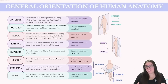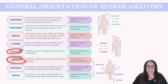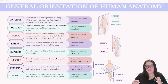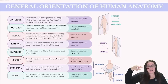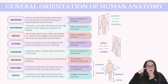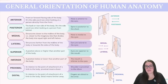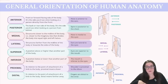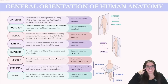Just like we talked about before with our transverse plane, we have superior and inferior. Superior means the position is above or higher than another body part — our eyes are superior to our mouth. When it comes to inferior, we're talking about a position that is below or lower than another body part, so we could say that the mouth is inferior to the eyes.